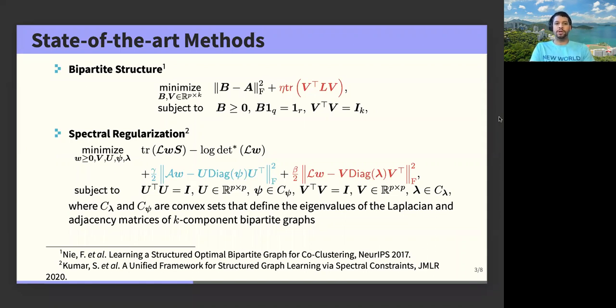Now the second approach is the so-called spectral regularization, which basically adopts a multivariate Gaussian distribution and models this multivariate Gaussian distribution's precision matrix as the Laplacian matrix of a graph. Basically, the optimization program that they propose contains two terms. The first term accounts for the negative log likelihood of this multivariate Gaussian distribution, and then the second term accounts for regularization terms that account for the structure. In this case, the first regularization term accounts for the bipartite structure, and the second one for the k-component structure.